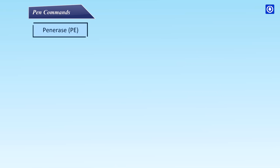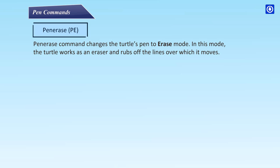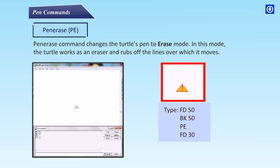Pen Erase (PE) command changes the turtle's pen to erase mode. In this mode the turtle works as an eraser and rubs off the lines over which it moves. For example, type: FD 50 BK 50 PE FD 30 — and type these commands in the input box.